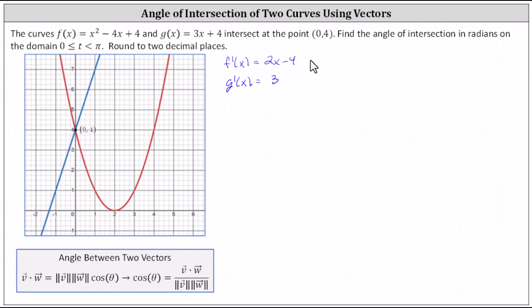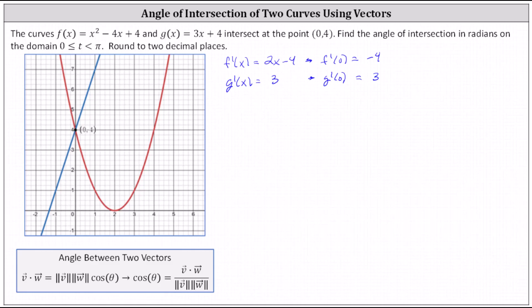Now let's determine the derivative function values at the point of intersection, or at x equals zero. f prime of zero equals two times zero minus four, or negative four, and g prime of zero equals three. This indicates the slope of the tangent line to f of x at the point of intersection is negative four, and the slope of the tangent line at the point of intersection for g of x is positive three.